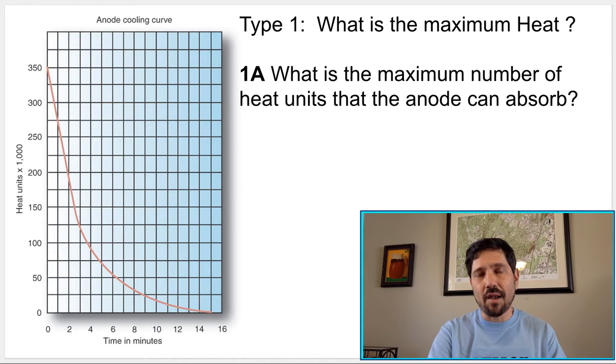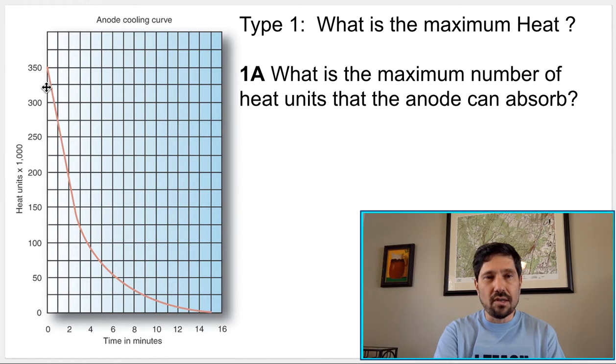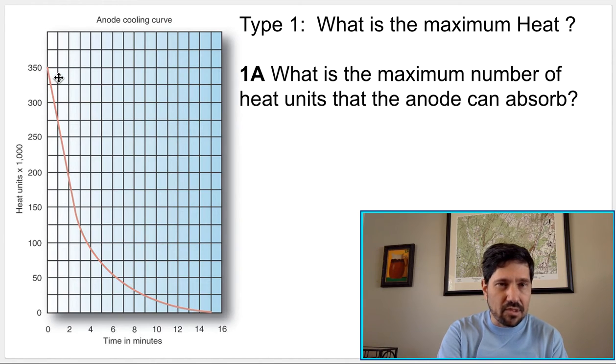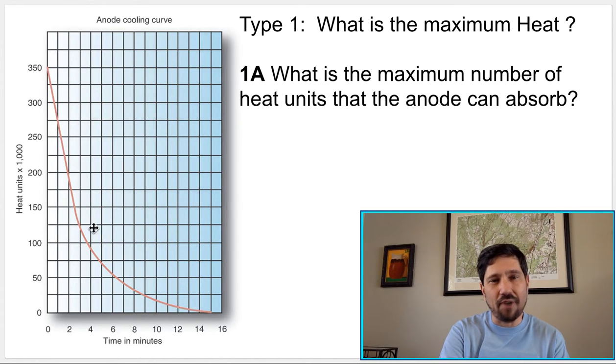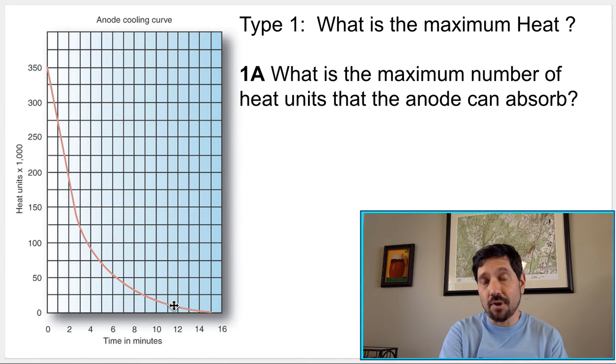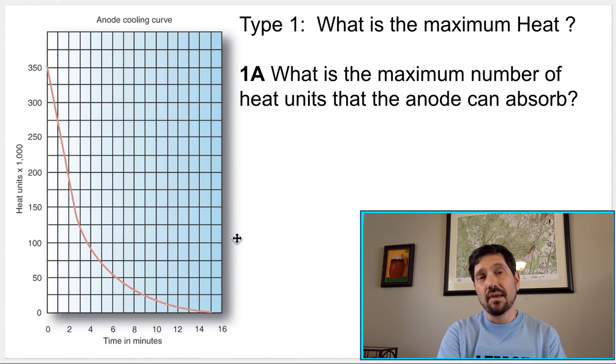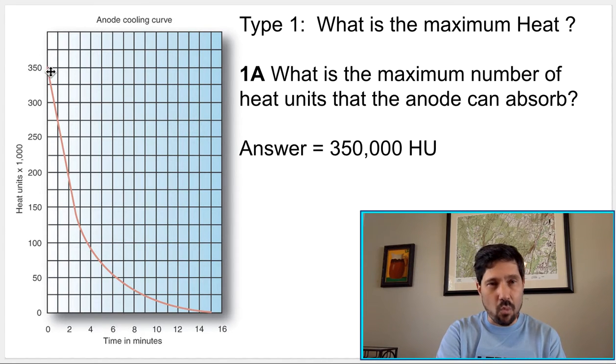So one of the types of problems you're going to be faced with is what is the maximum heat? They'll say what is the maximum number of heat units that the anode can absorb, and these are nice and easy because all you need to do for this is read off the top number. In this problem it would show us 350,000 heat units, because that is the maximum. We might have to wait five or six or eight or ten minutes before the next exposure for it to cool down. If we shot it past that maximum, it would overheat. So here you would just find where it is across zero, 350,000. That's your answer.